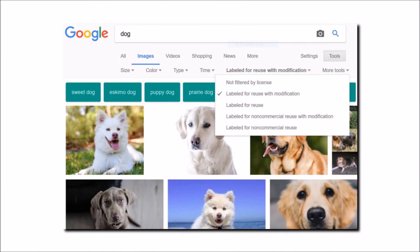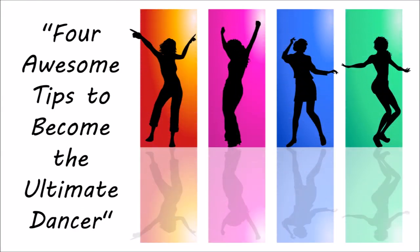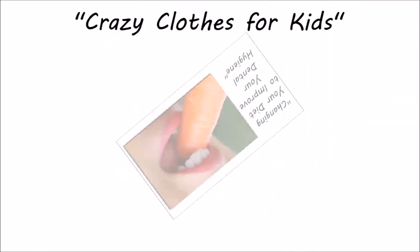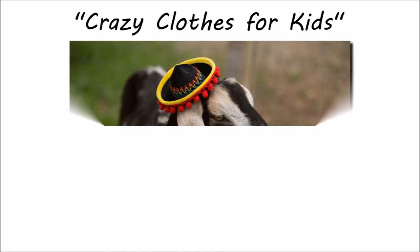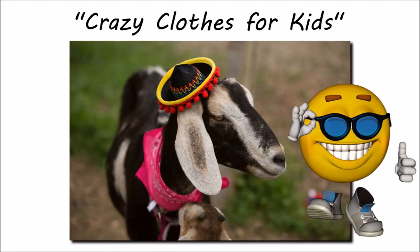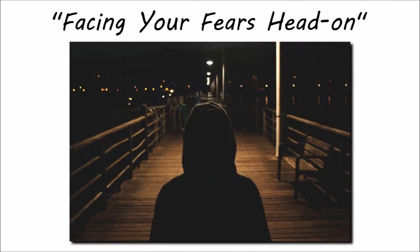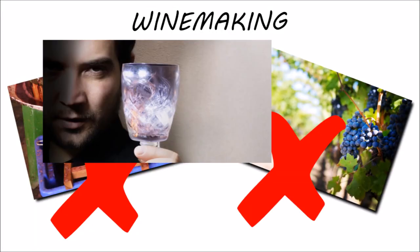Obviously, men are attracted to anything that shows a little bit of skin, so if your video is about gardening, you could show a picture like this. If you've made a video called 4 Awesome Tips To Become The Ultimate Dancer, then you could use a picture like this. For more serious topics like changing your diet to improve your dental hygiene, a picture like this would suffice. Just say you've made a video titled Crazy Clothes For Kids – people love animals, they also love humour, so you could use a picture like this. Killed it! For darker topics such as facing your fears head-on, you could use a darker themed picture such as this. And for a video on winemaking: boring, boring – nailed it!